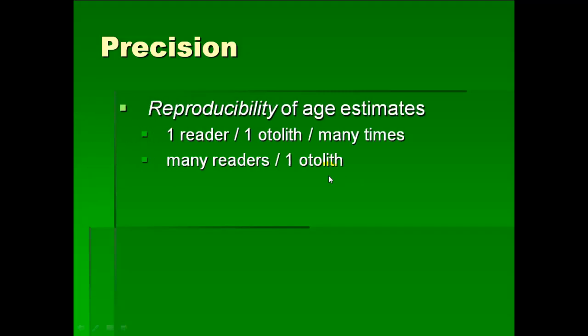So accuracy is very important, but it's very difficult to measure. Precision is also important, and it's much easier to measure. Several different ways we can talk about precision. Precision, remember that this is the reproducibility or the repeatability of age estimates. One reader on the same structure many times, do they always get the same answer? Many readers looking at the same structure, does each reader seem to get the same answer?